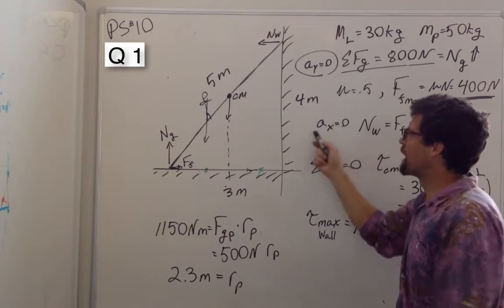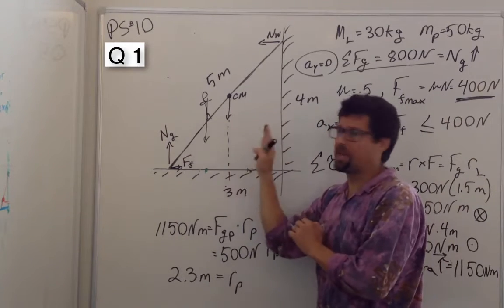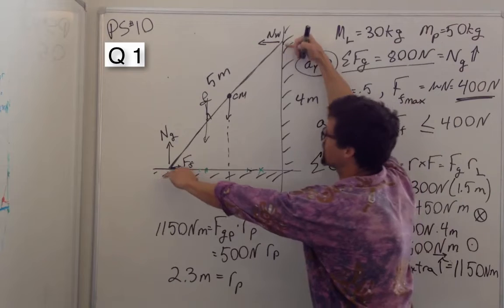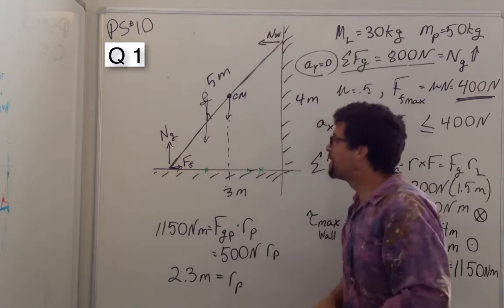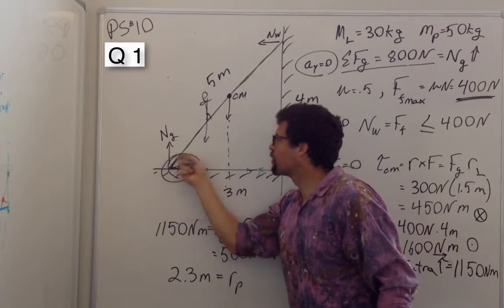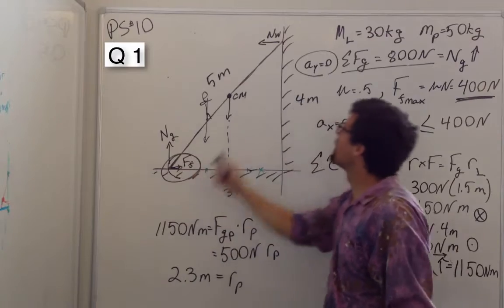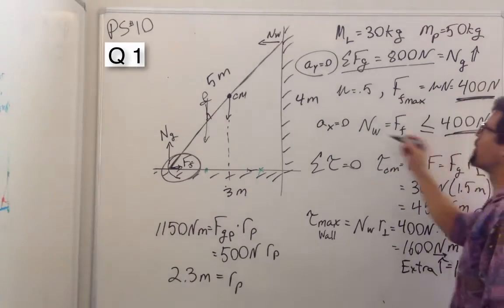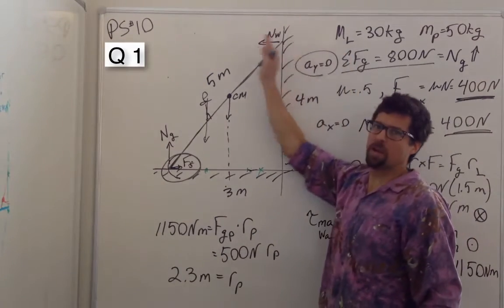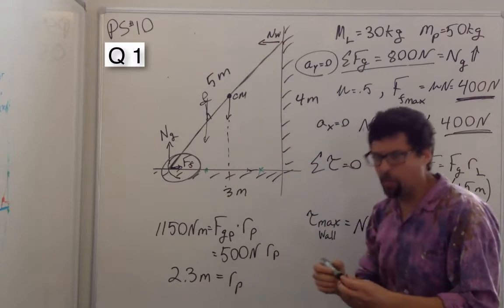And so if we look at the x direction, we want it to be in equilibrium. There are only two forces in the x direction. So if this is the maximum frictional force we can get before we slip, that's also equal to the maximum normal force that this wall can be pushing.